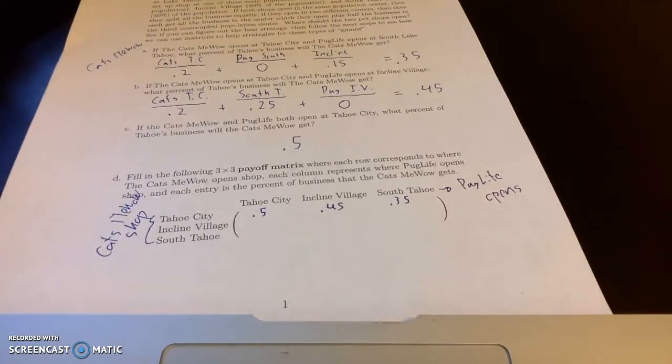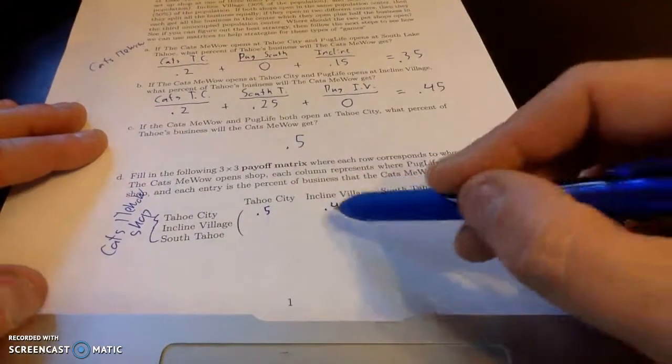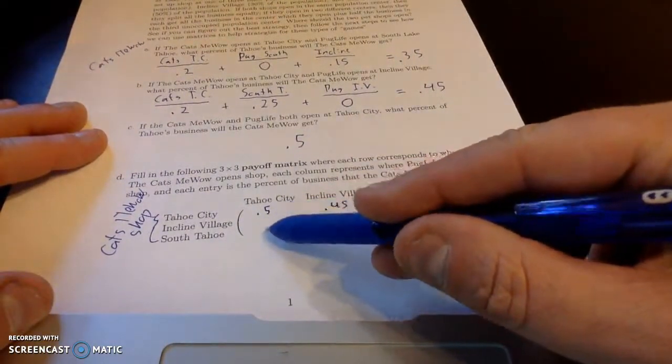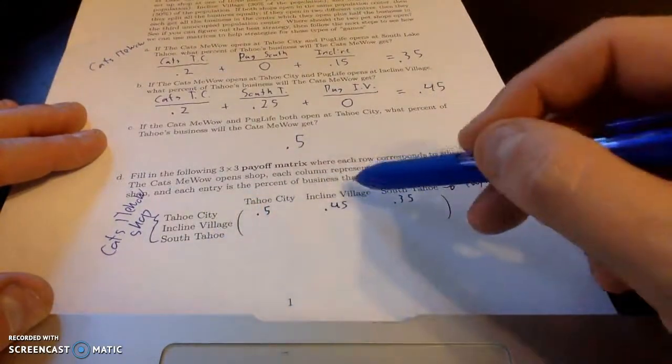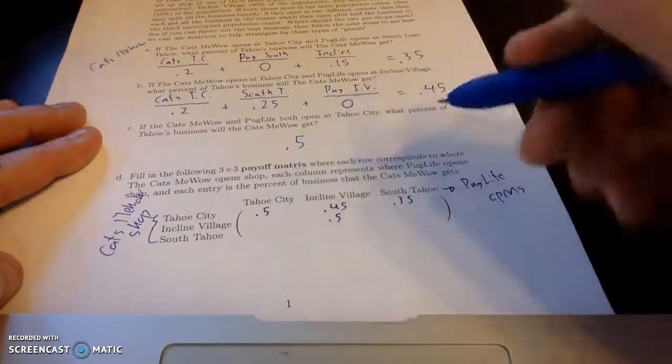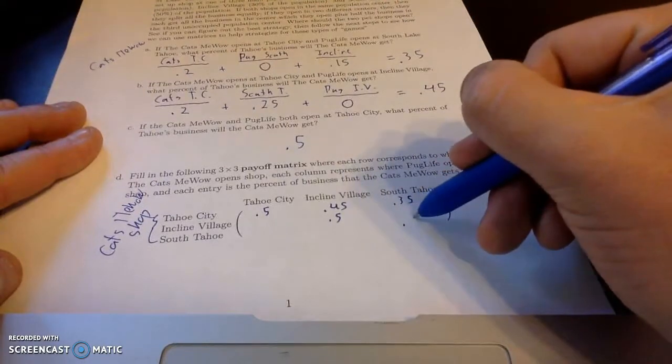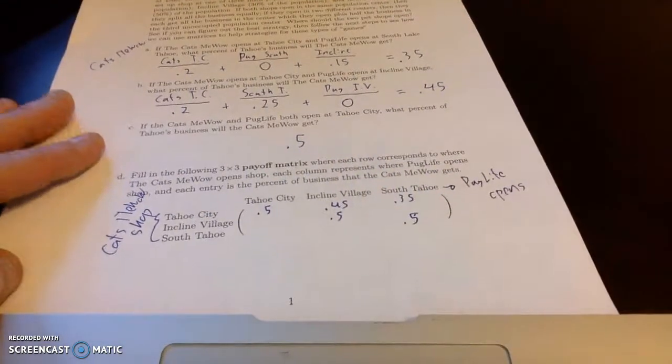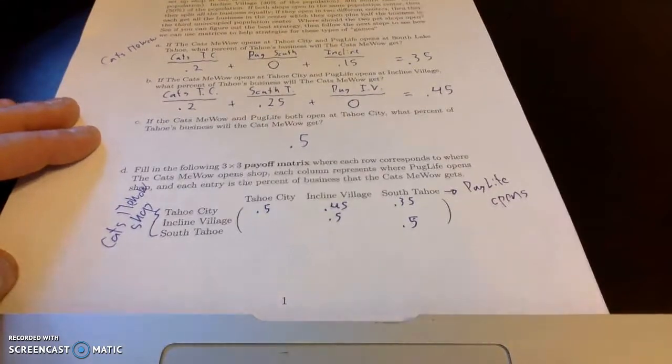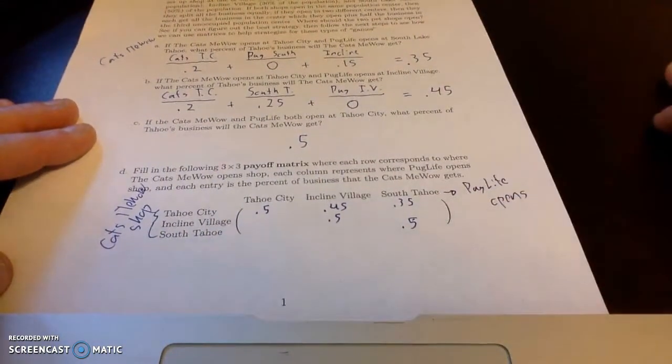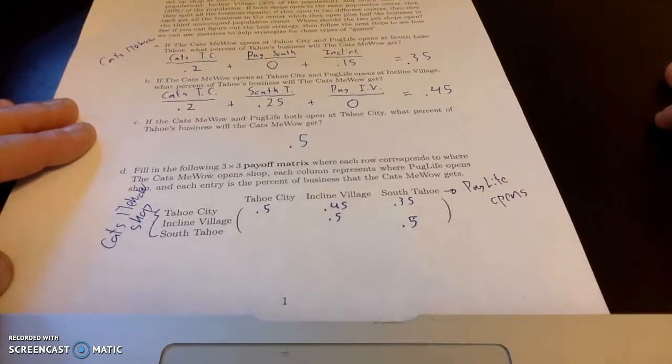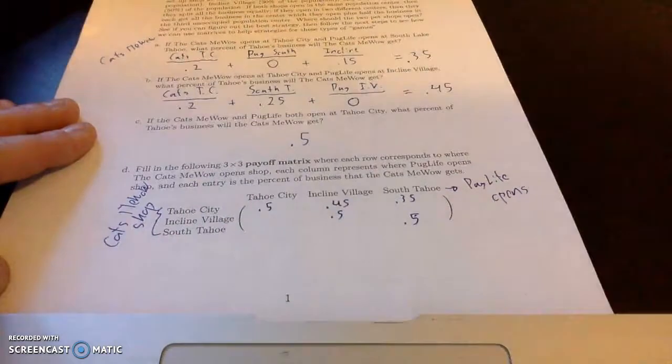Okay. So what I want to do is fill out the rest of this payoff matrix. One thing to note, there's six more positions to fill in. But if they both open in the same place, we're going to get that .5. If they both open in Incline, it's .5. If they both open in South Shore, it's .5. Alright. So if you want to practice this setup, I suggest you pause it and see if you could fill in the rest of these values. Otherwise, I kind of went through, I sketched out, very messy handwriting, how to actually compute these values.